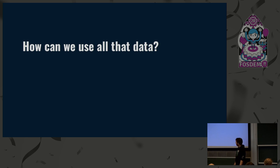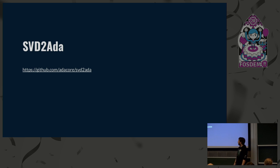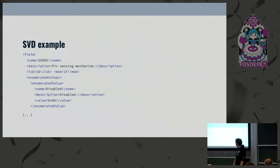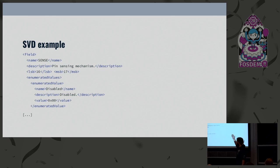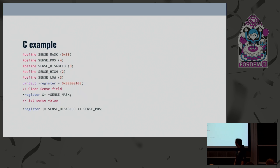Now the question is: how can we use all that data? First, we can use a tool we developed at AdaCore called SVD to Ada. What it does is take an SVD file — a plain XML file that describes down to each field of every register what its purpose is and what the different register values mean — and generate Ada bindings for it. How would you interact with registers in C? You would define your macros, set a register at an address, and use binary operations to set the mask on your register. If it works, it's fine, but it can be unwieldy, and the C type system is not helping you at all.